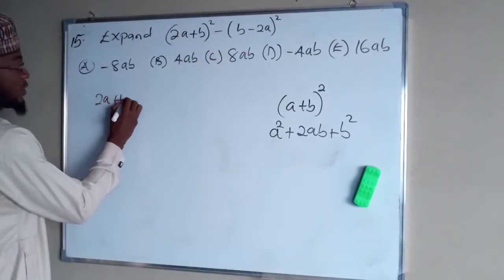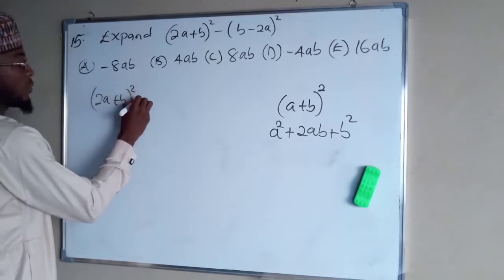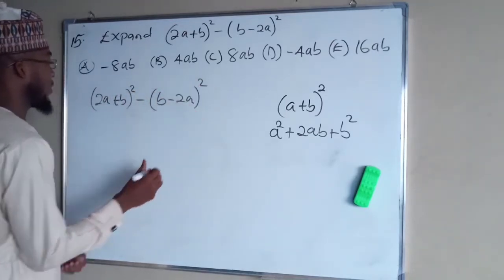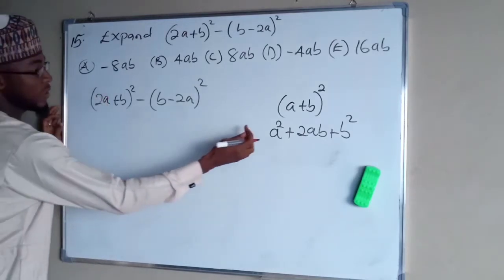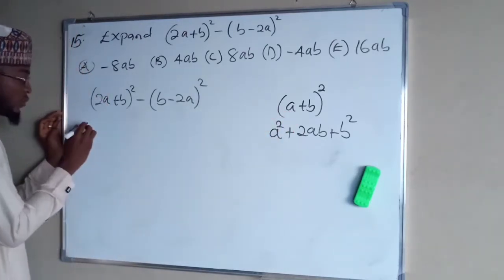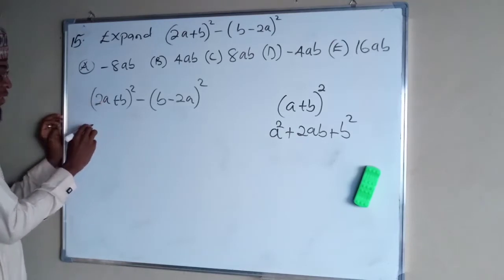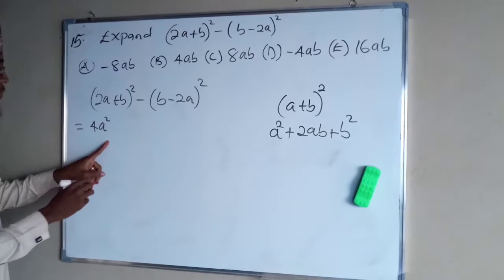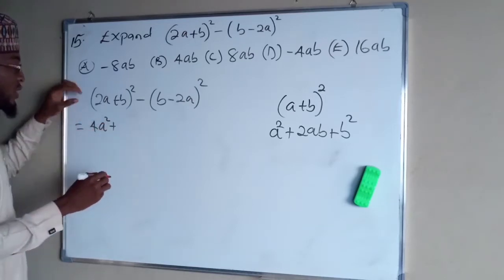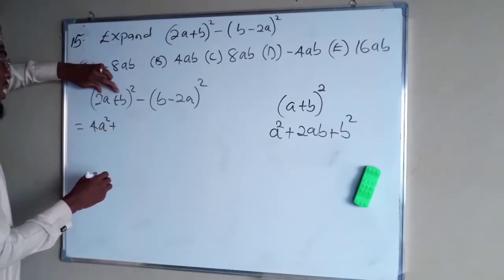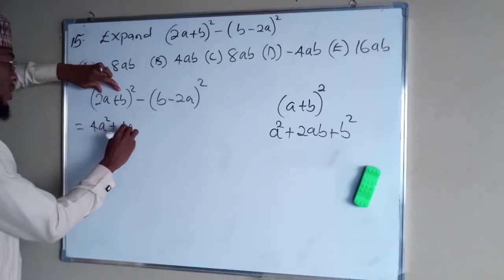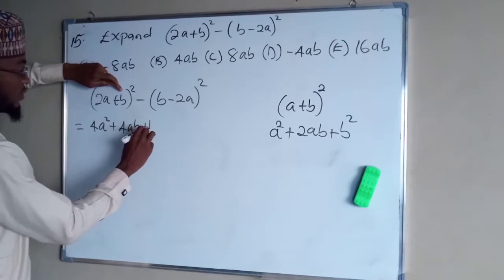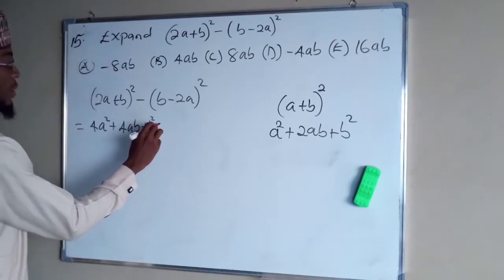It's 2a plus b squared minus b minus 2a squared. This one, the whole of this 2a, you take it as this a, so you square it. If you square the first term you have 4a squared plus 2 times this is 4ab. Then the last term squared which is b squared minus.